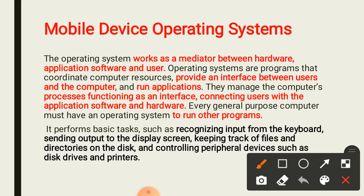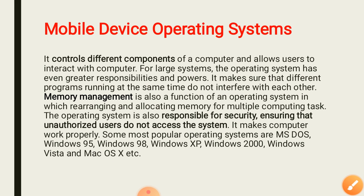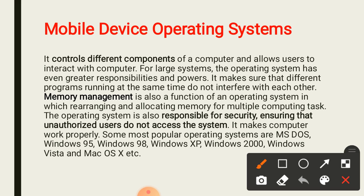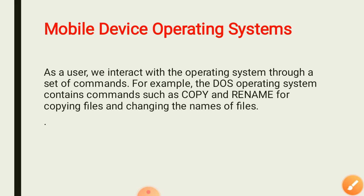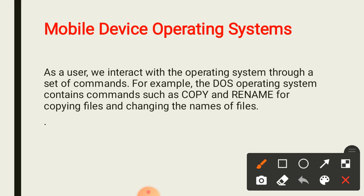The operating system functions as an interface connecting the user with application software and hardware, and it also runs other programs. The OS controls different components of the computer and allows the user to interface with it. It performs memory management and is responsible for security, ensuring that unauthorized users do not access the system. We interface with the OS through a set of commands — for example, in DOS we had commands such as copy and rename for copying files and changing file names.